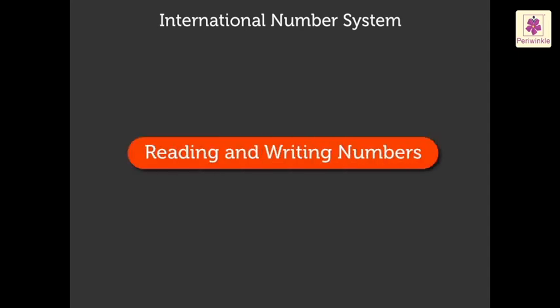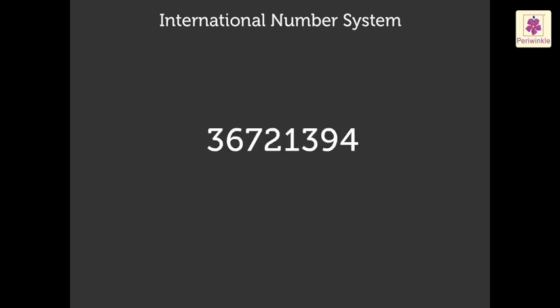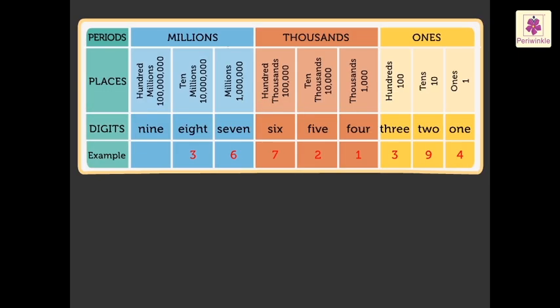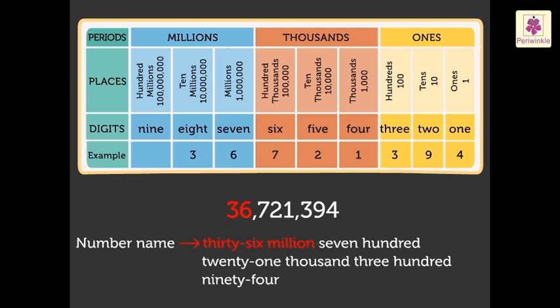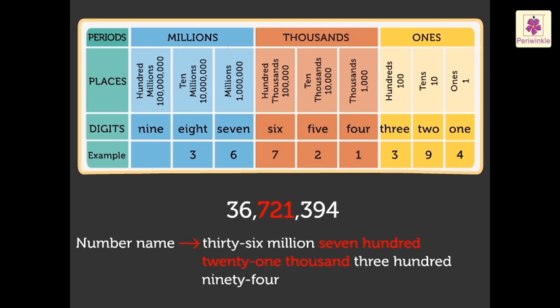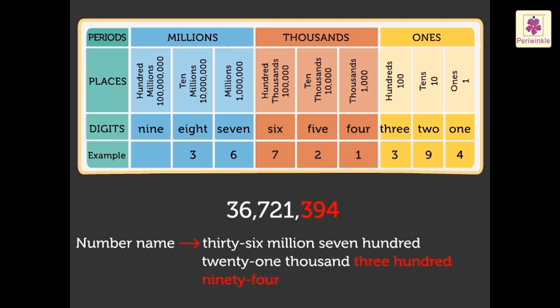Now, let us learn to read and write numbers using the International number system. Remember: commas are inserted from the right after every three digits. Look at the example on the board. We write it as 36,721,394. The number is read as thirty six million, seven hundred twenty one thousand, three hundred ninety four.